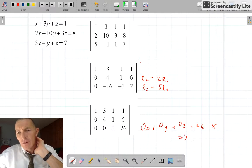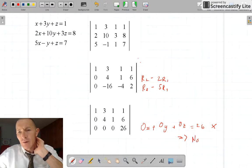Okay, so therefore, there are no solutions. So if you end up with 0, 0, 0, but a number here, you simply have no solutions.